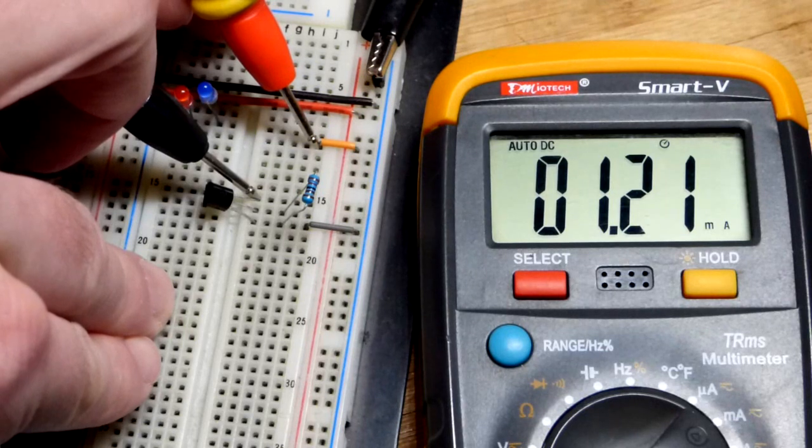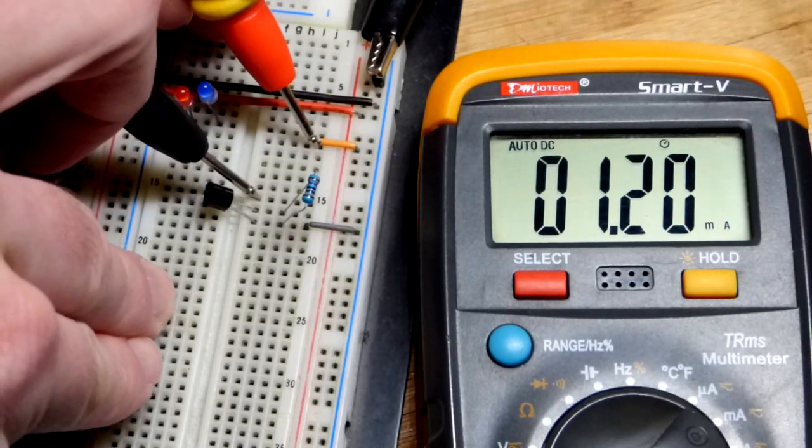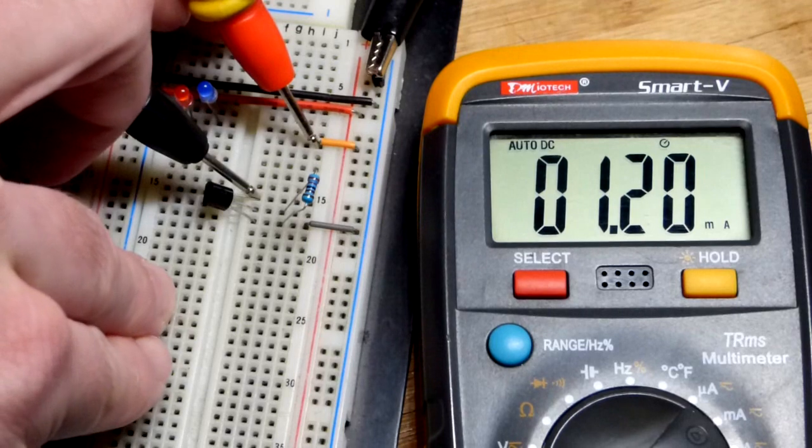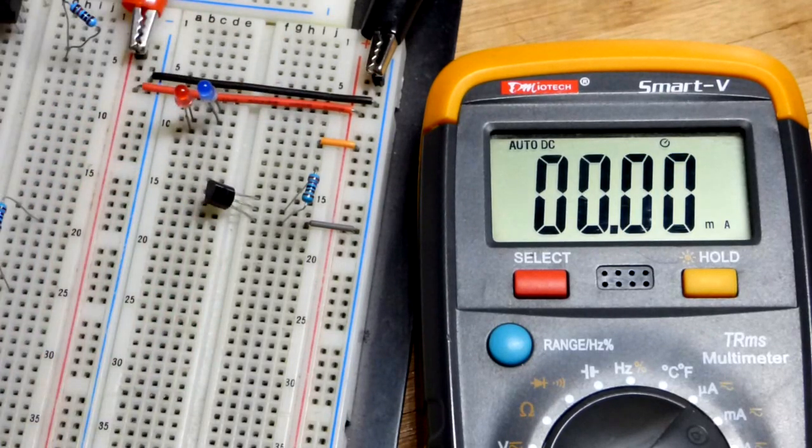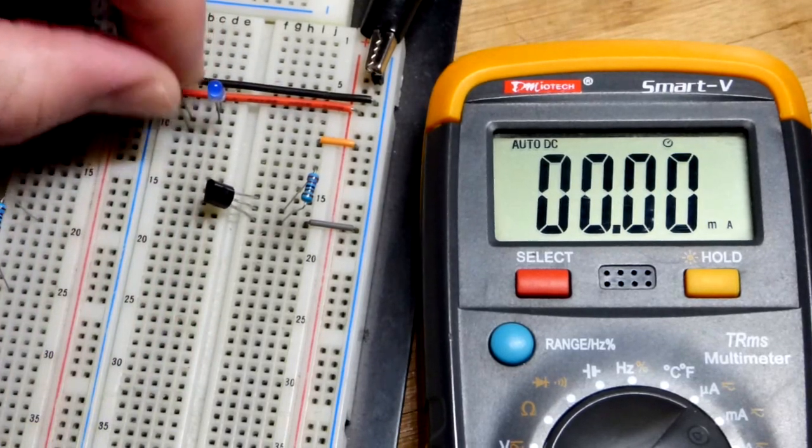And with the resistor that I have, 2,200 ohms, we got 1.2 milliamps of current. So I could go up a little bit in resistance in some way to lower that a little bit.